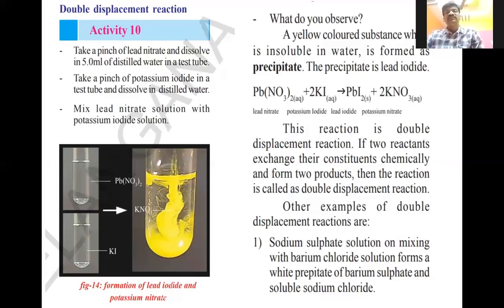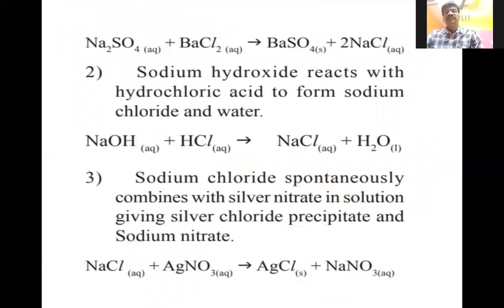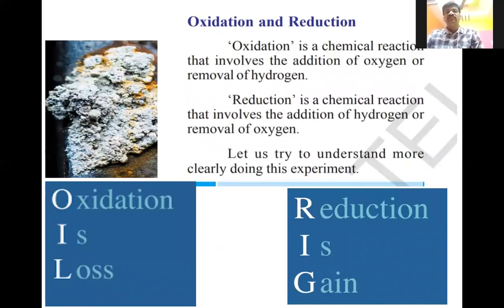If two reactants exchange their constituents chemically and form two products, the reaction is called a double displacement reaction. Another example: sodium sulfate solution mixed with barium chloride solution forms a white precipitate of barium sulfate and soluble sodium chloride — Na₂SO₄ + BaCl₂ → BaSO₄ + 2NaCl. Another example: sodium hydroxide reacts with hydrochloric acid to form sodium chloride and water — NaOH + HCl → NaCl + H₂O. Also: NaCl + AgNO₃ → AgCl + NaNO₃. In this way, double displacement reactions are observed.